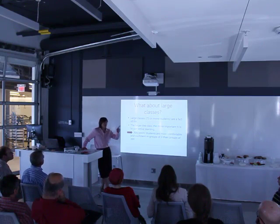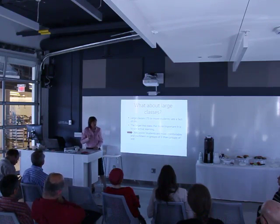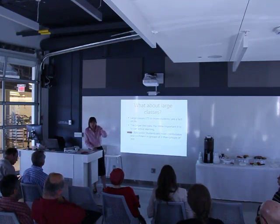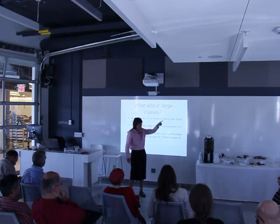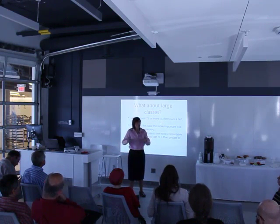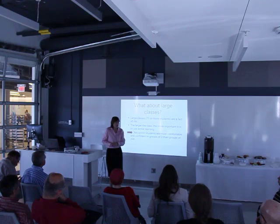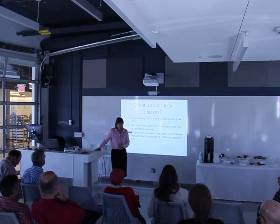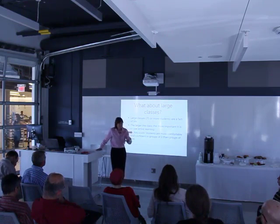At the very start of class, before students know what's going on, I'll have them count off — up to 12, then restart at 1 — and I tell each number where to go in the room. The purpose is that you don't want friends sitting together. Counting off like this automatically breaks up all the pre-established friend groups.